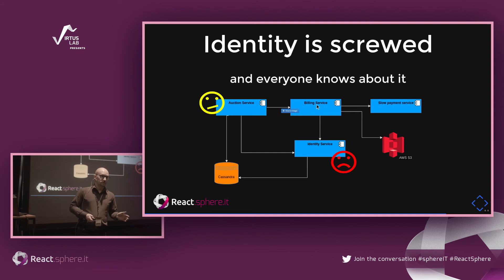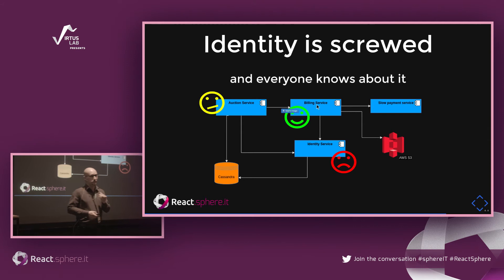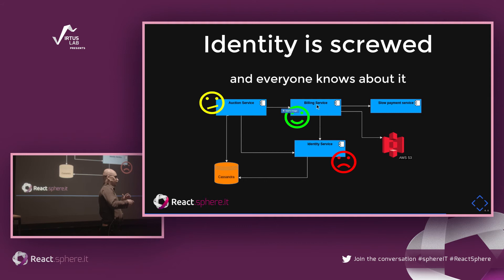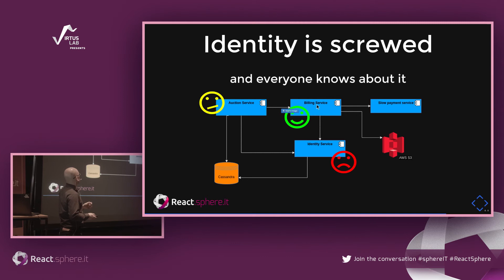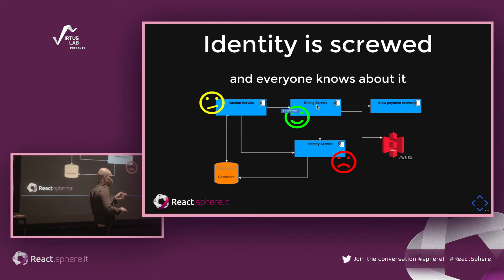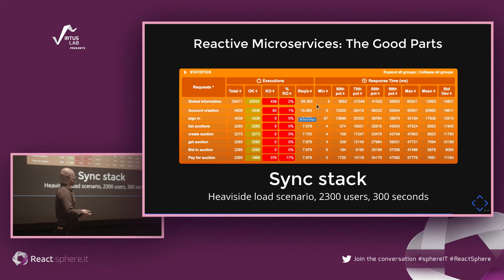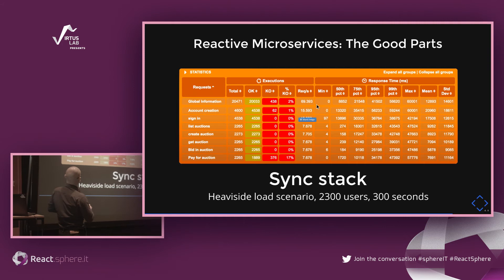Let's talk about the landscape of our load tests. As Marcin mentioned, identity service is going to get heavy load and we aren't really expecting it to cope — we're treating it as a data point to see how it impacts overall results. It will skew global results but that's okay. Auction service takes moderate traffic from one pool of users, and billing service only deals with long-running connections at the end of the customer journey. In the heavy side scenario, 2,300 users are hitting the synchronous Scalatra stack over 300 seconds.